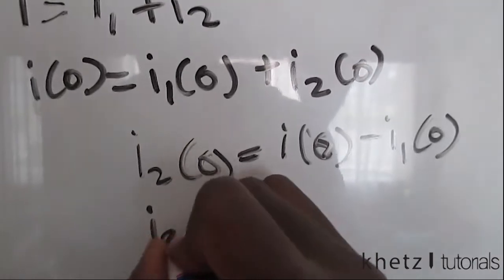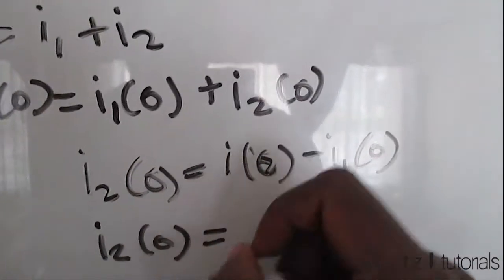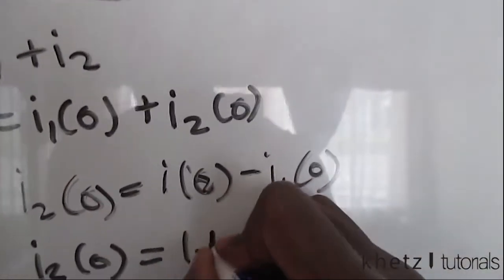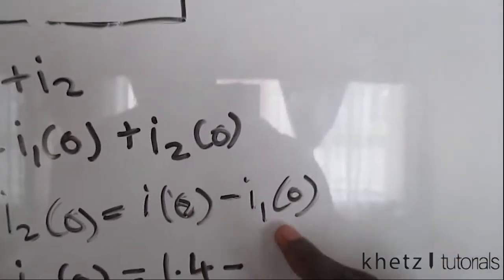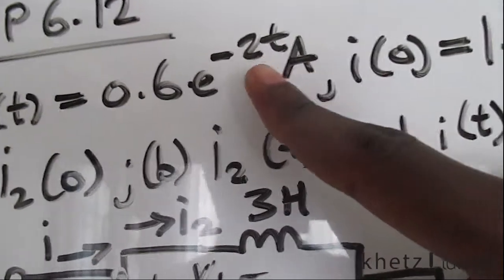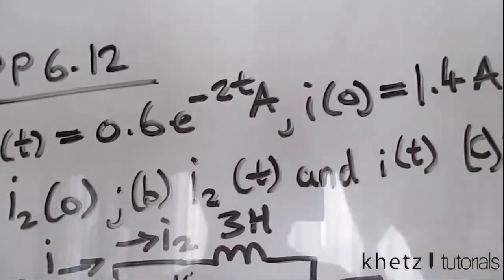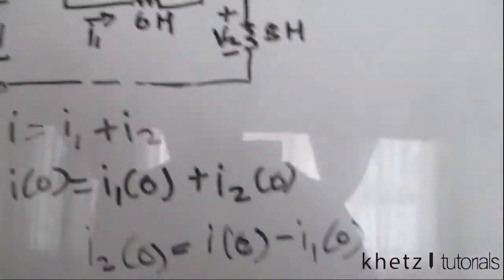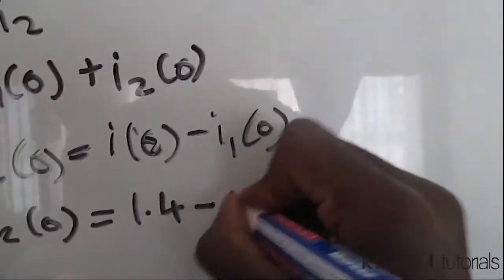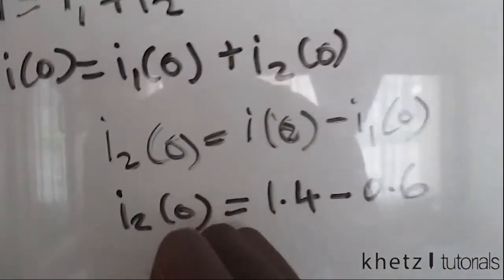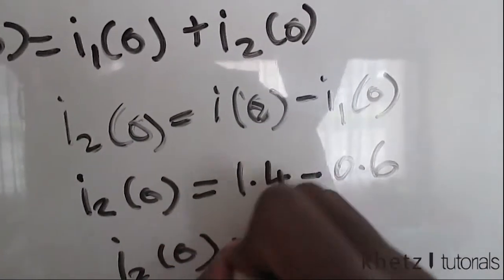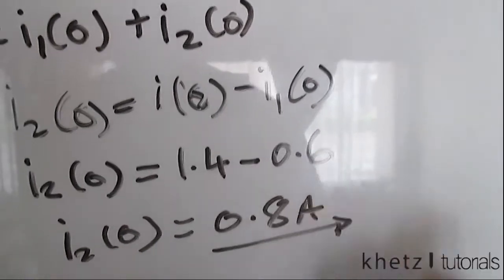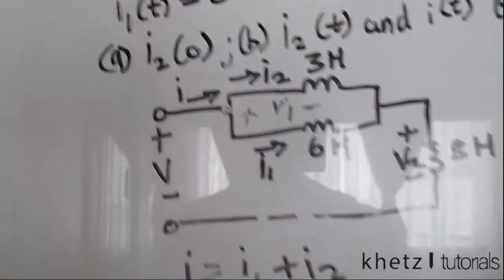We know i(0) is given as 1.4, so i2(0) equals 1.4 subtract i1(0). Substituting zero gives e to the power zero which is 1, so this is only 0.6. Therefore 1.4 subtract 0.6 gives 0.8 amperes. That is the first part of the question — we have solved part A.